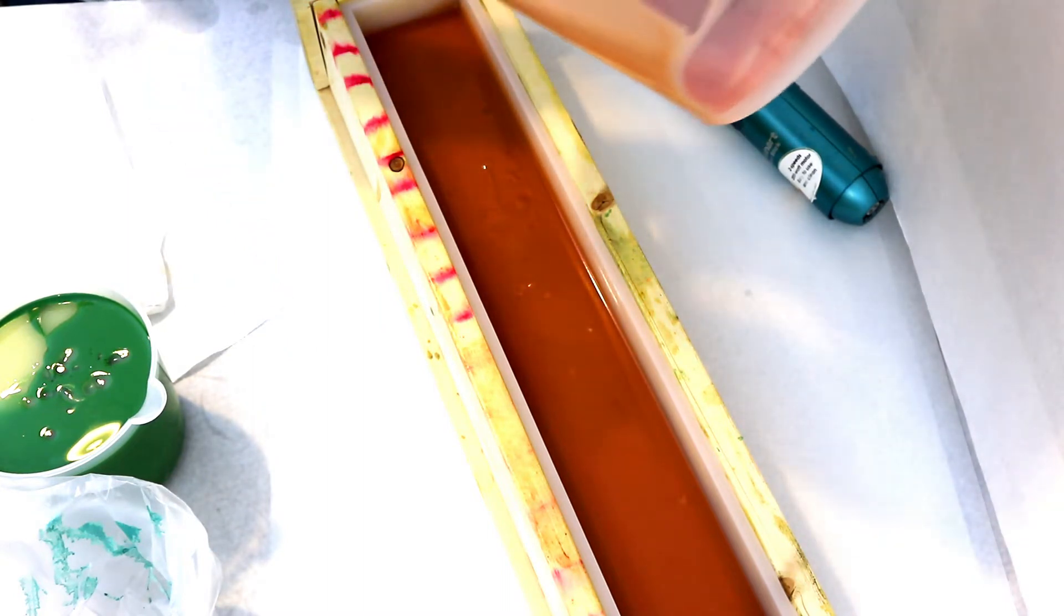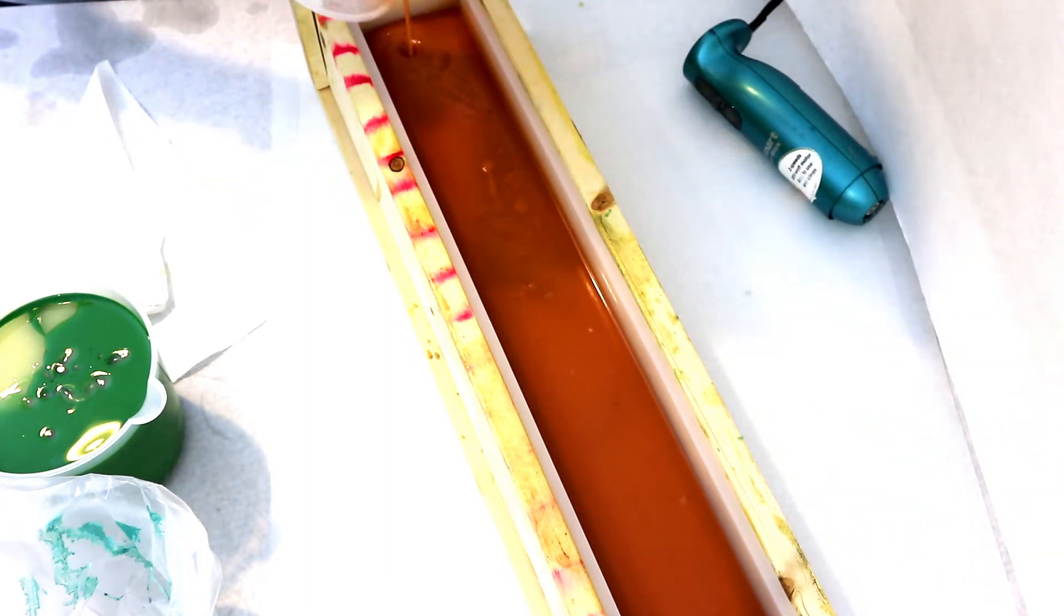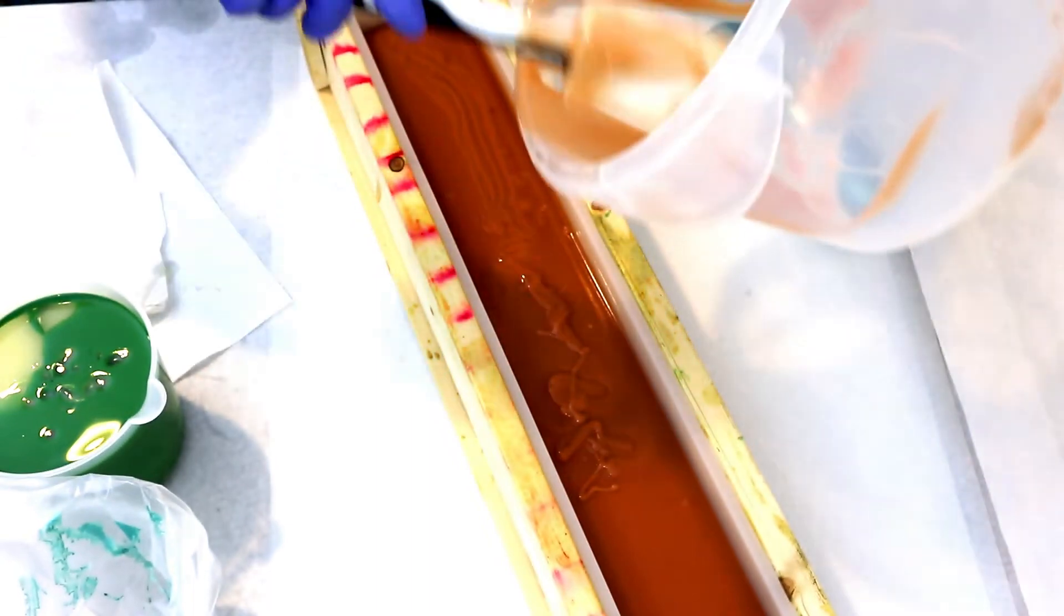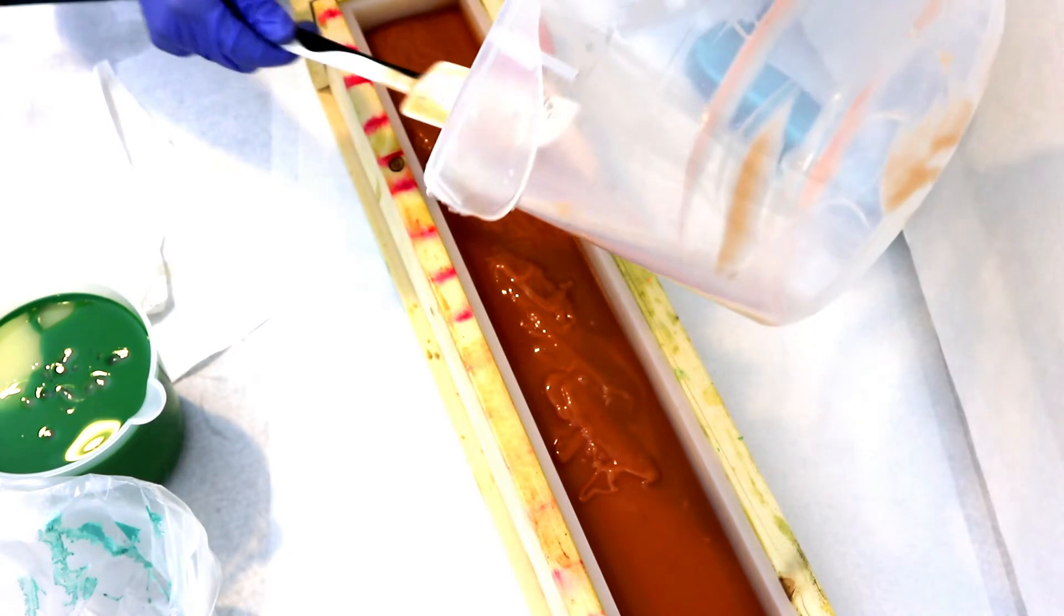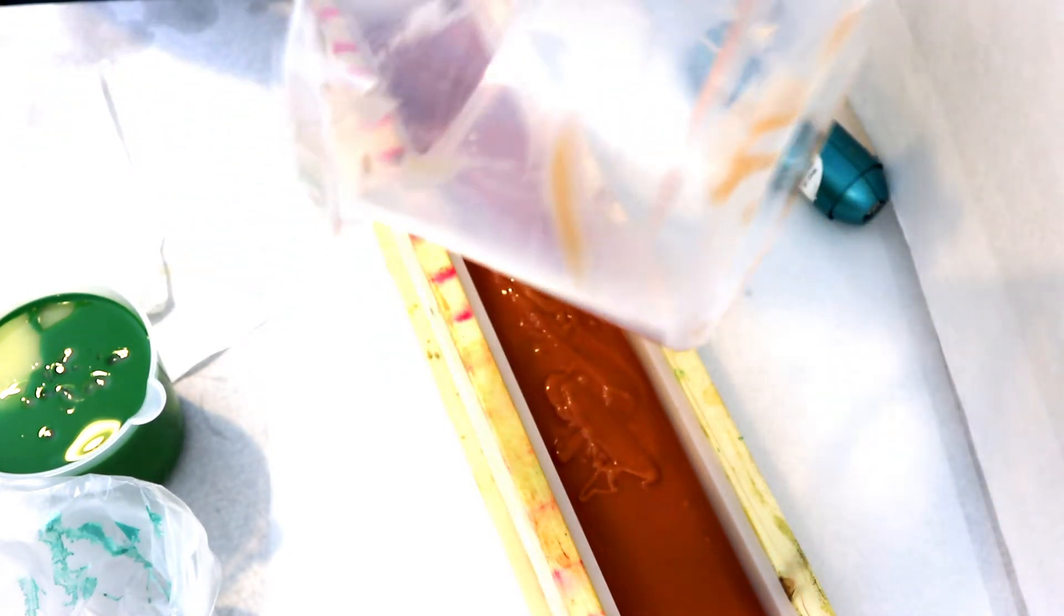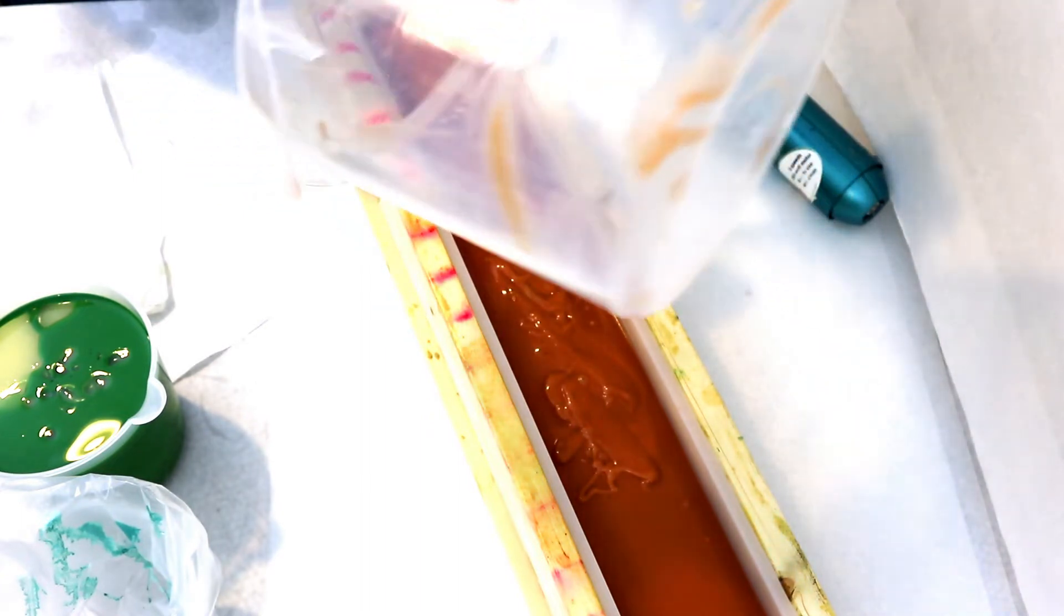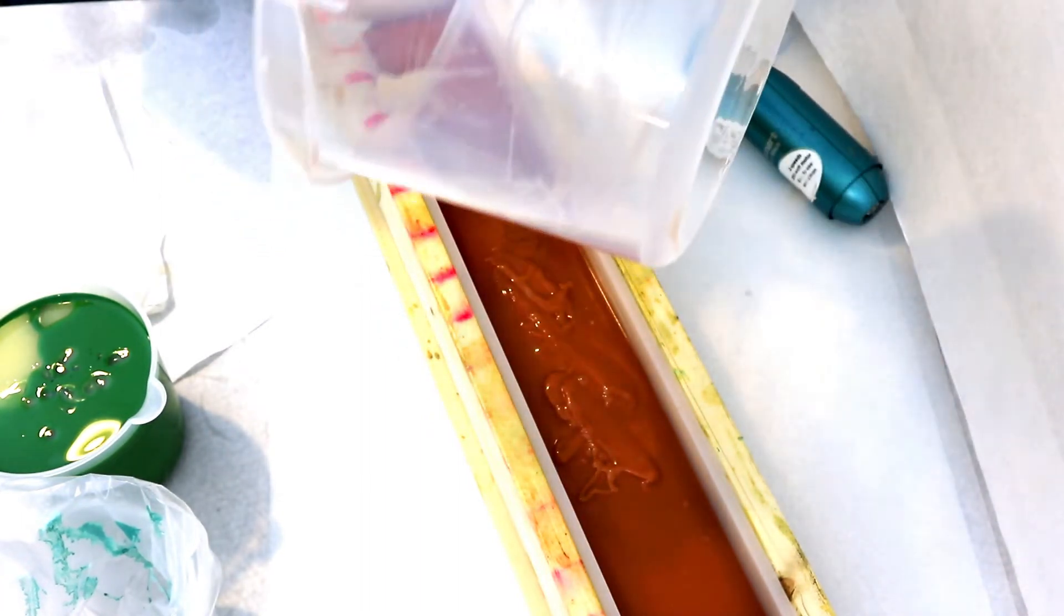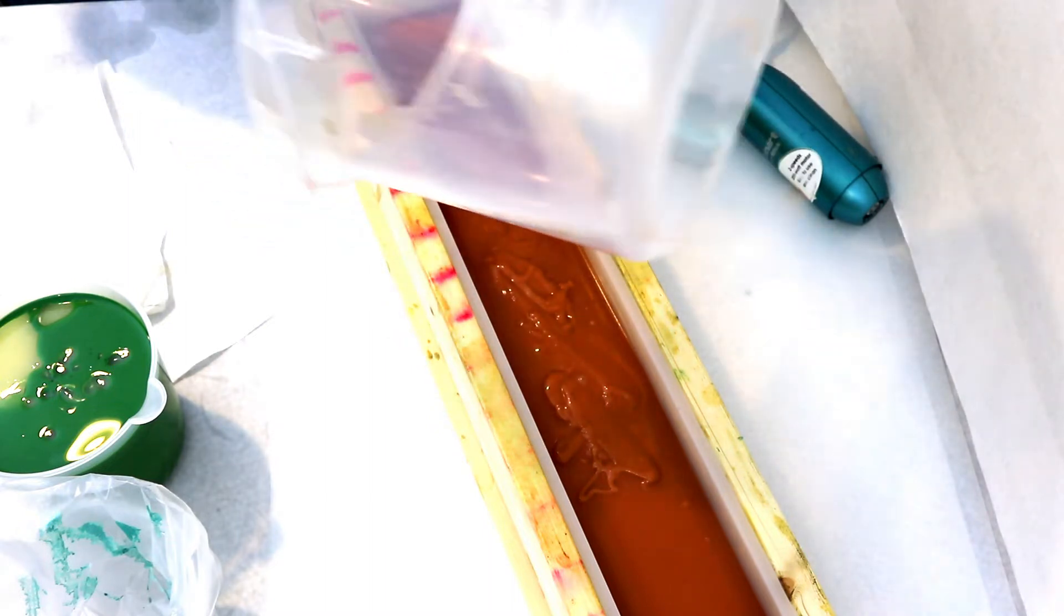I source my rose clay and kaolin clay - I'll put all the places that I get my ingredients for this one down in the description - but I get it from Majestic Mountain Sage. I've bought rose clay from different places but I find that Majestic Mountain Sage is really good. I also like the Bramble Berry one too. Some clays I've bought have been more red than pink, and I really like the pink color, so I try to get them from the same place always.